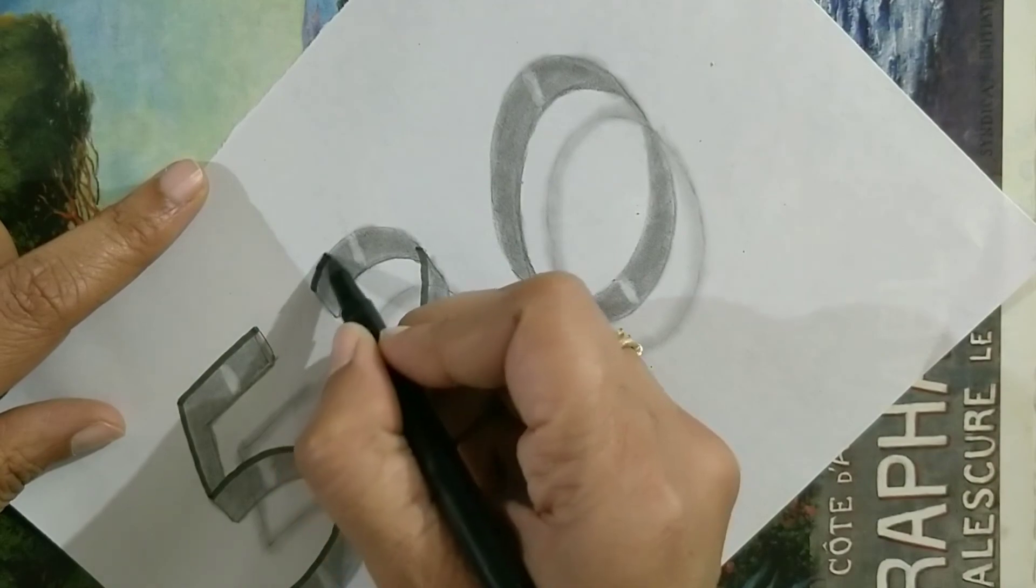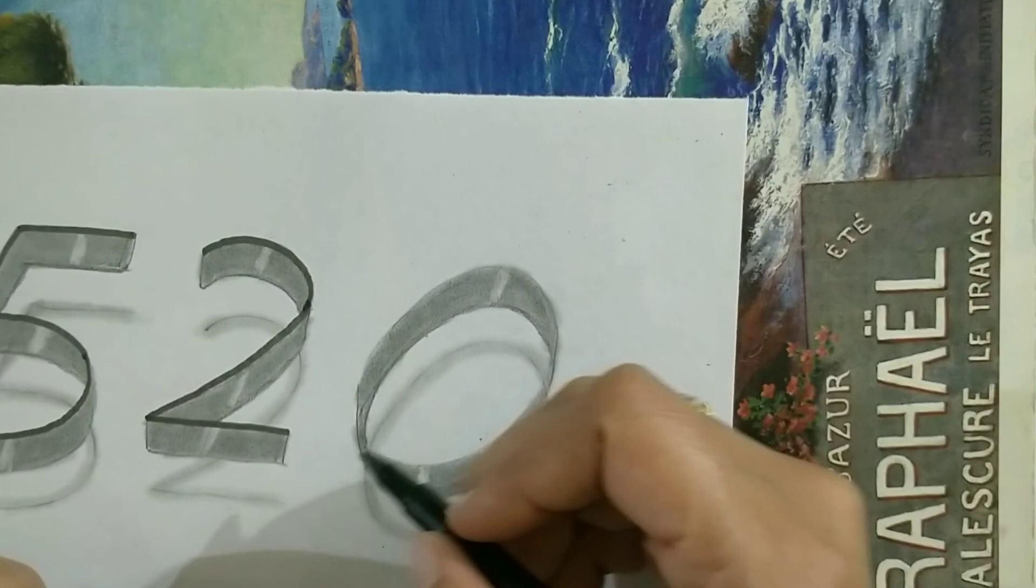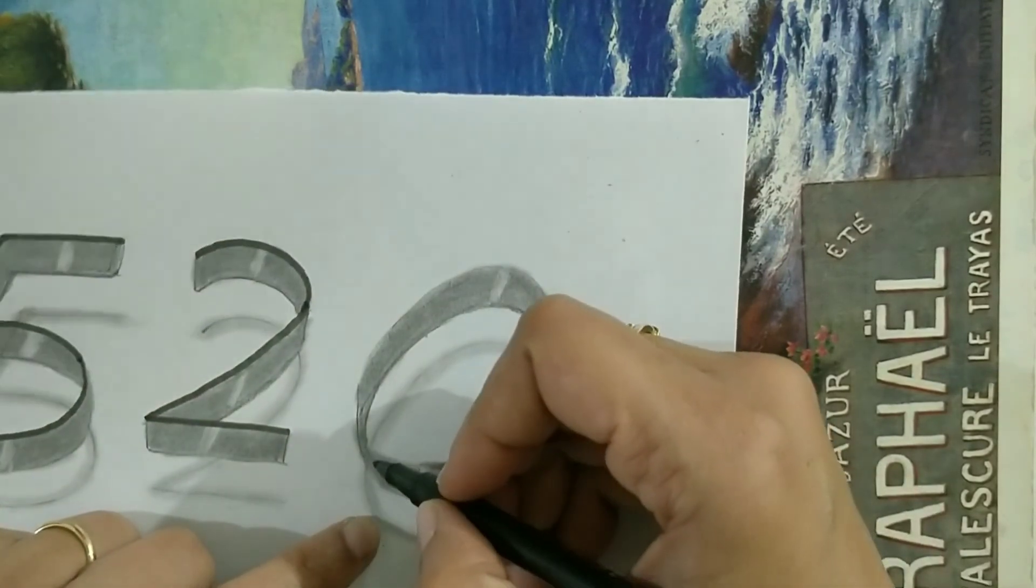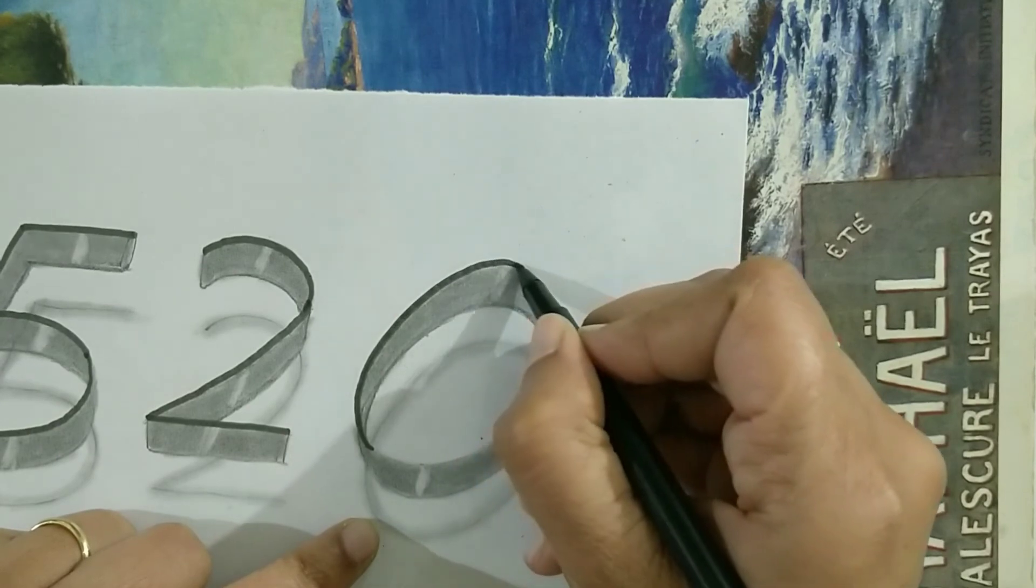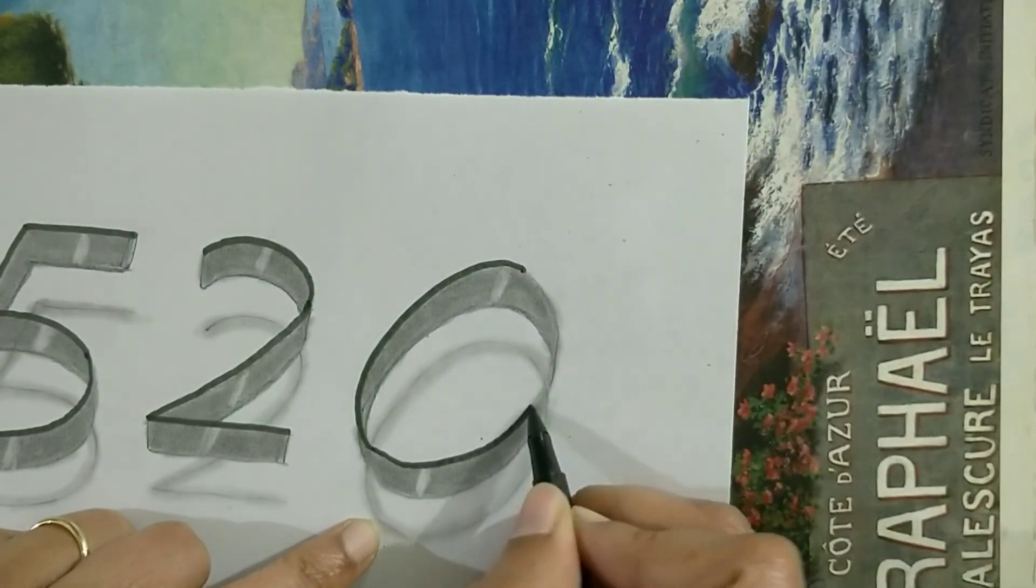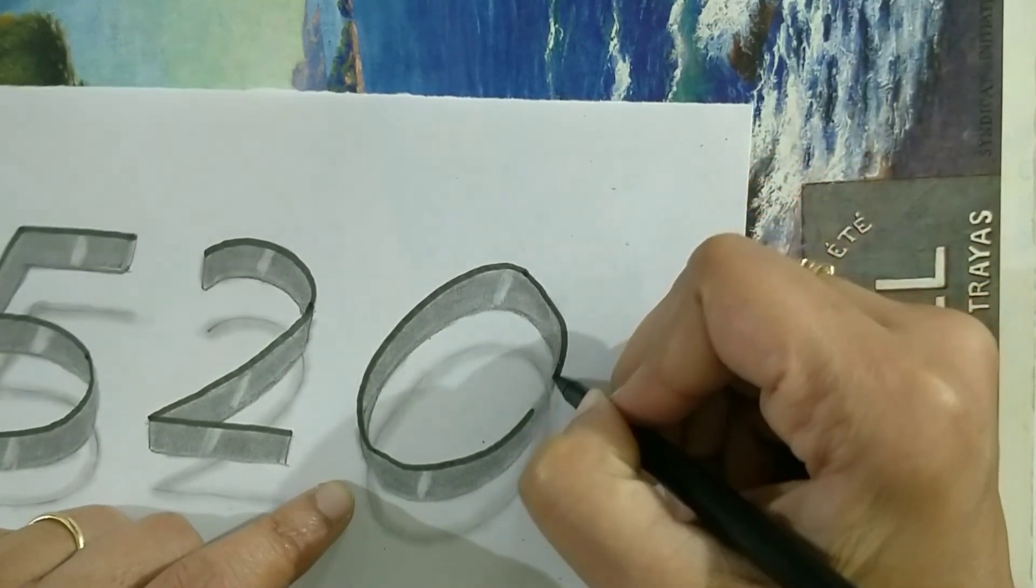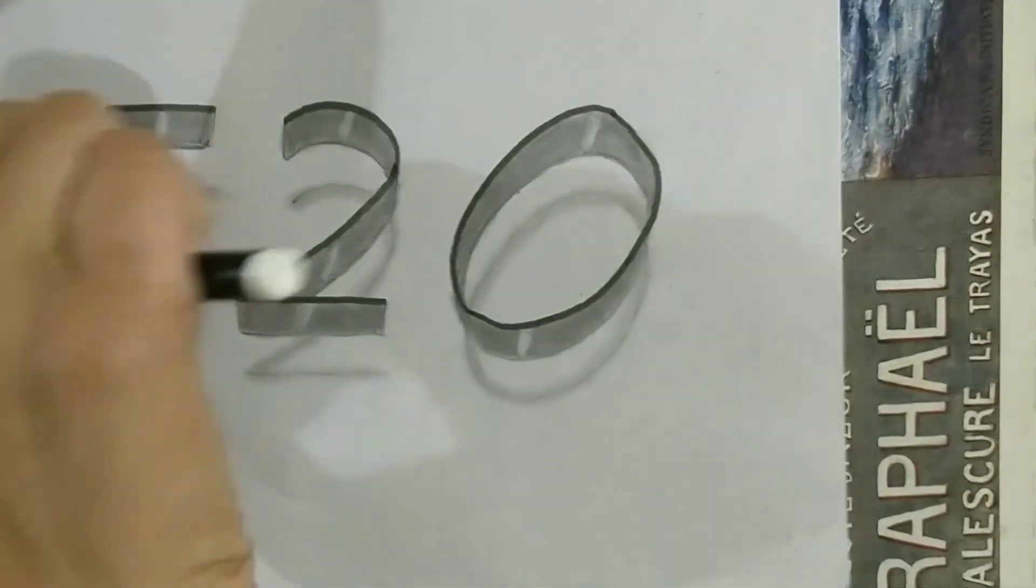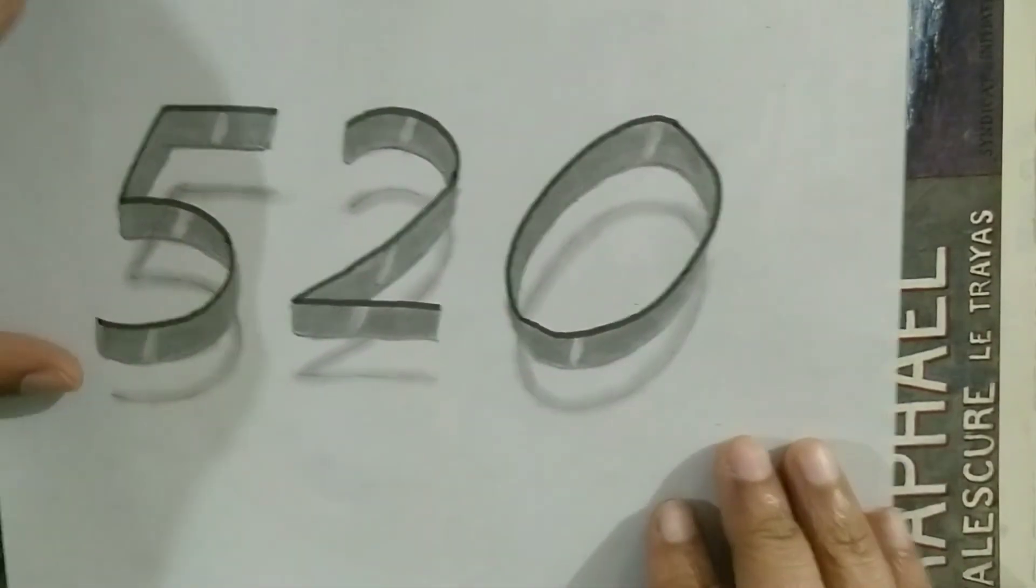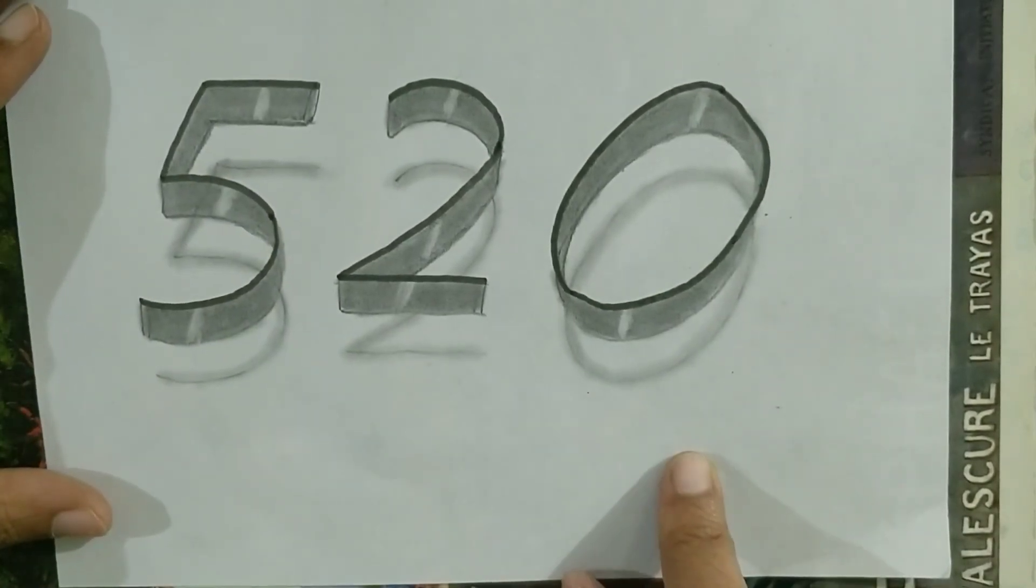And this will come like this. This is how your numbers will look like. And do you see, this is how the flying numbers will look like. So 520 as flying numbers. Do try at home, share your pictures, share your comments.